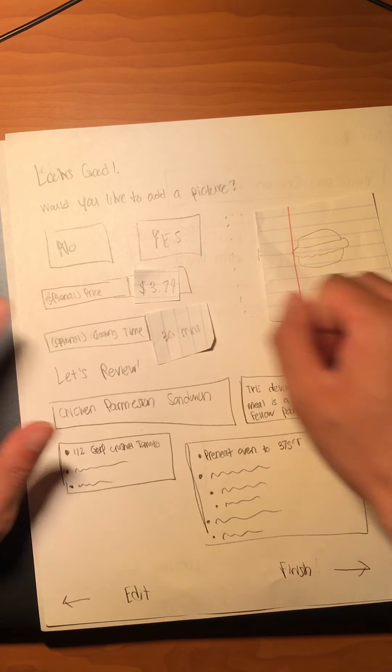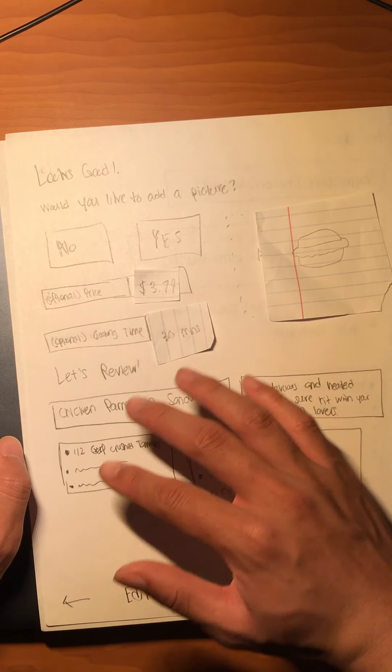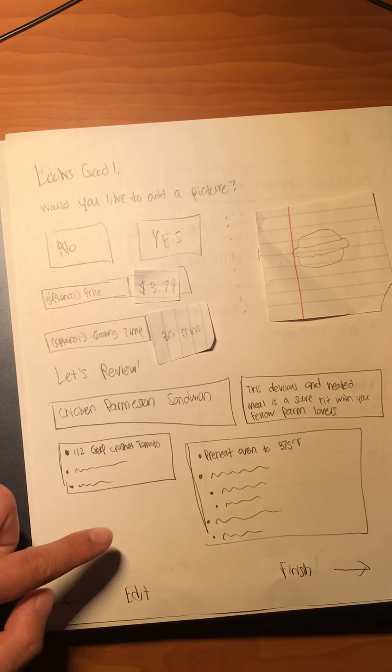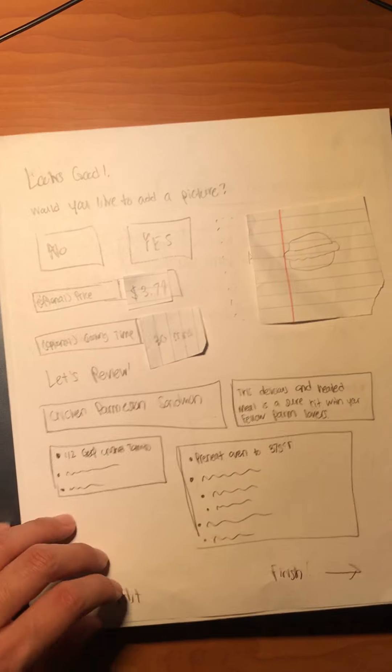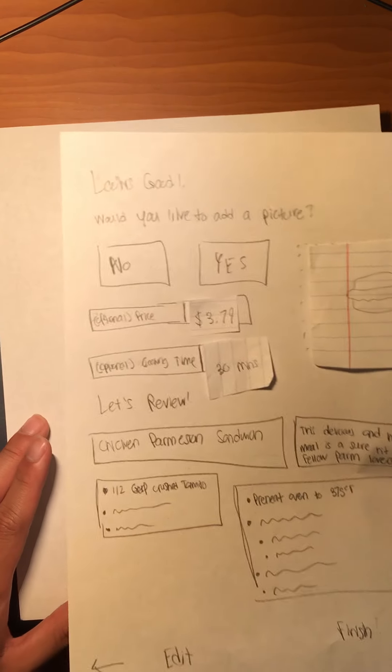A review screen gives the user an overview of everything they inputted on the previous steps. If they don't like something, they can go back and edit it; otherwise, they click finish to submit the recipe to the application for others to browse, view, edit, and rate. Once they leave, they're shown a 'see you soon' screen with the app's logo, and they can return to continue using the app.